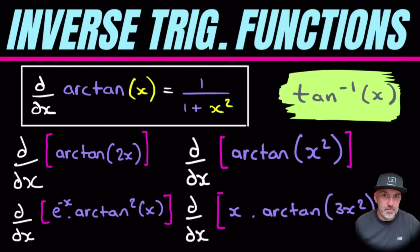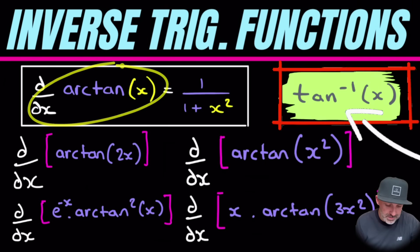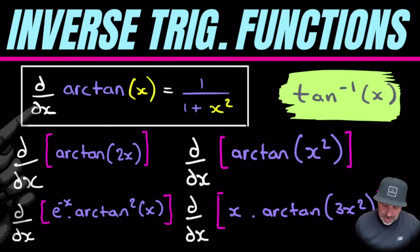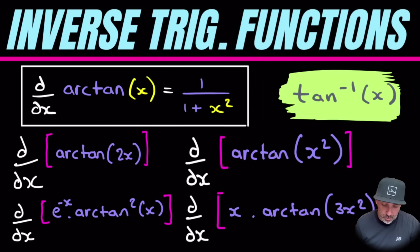Welcome back and this is another video on the derivative of an inverse trig function. This one focuses on arctangent x and the result of that is 1 over 1 plus x squared. Now I will delve a little bit deeper into that, what happens if it's not just x, so keep watching the video.